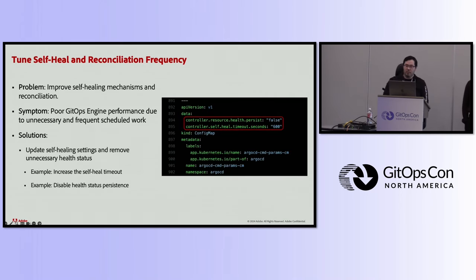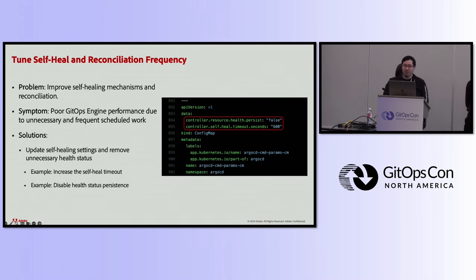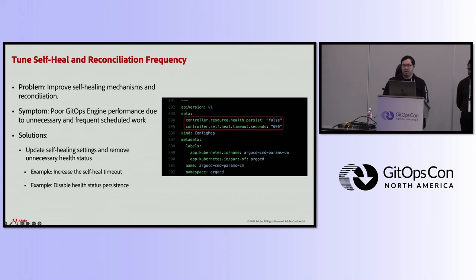Another problem was the frequency of self-healing actions performed by the GitOps engine, partly due to some misconfigured problematic applications. Our GitOps engine was performing extremely frequent self-healing and spending reconciliation cycles on unnecessary resources. For example, if you have self-healing turned on in Argo CD, the default timeout is five seconds — we tuned that up to 10 minutes. We also disabled health status persistence, which reduces the number of application CRD updates and data volume on the Kubernetes backing store (etcd), and also improves application controller performance.